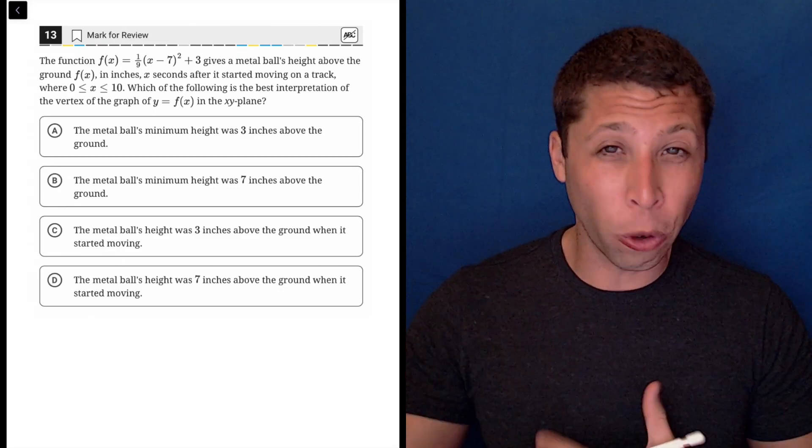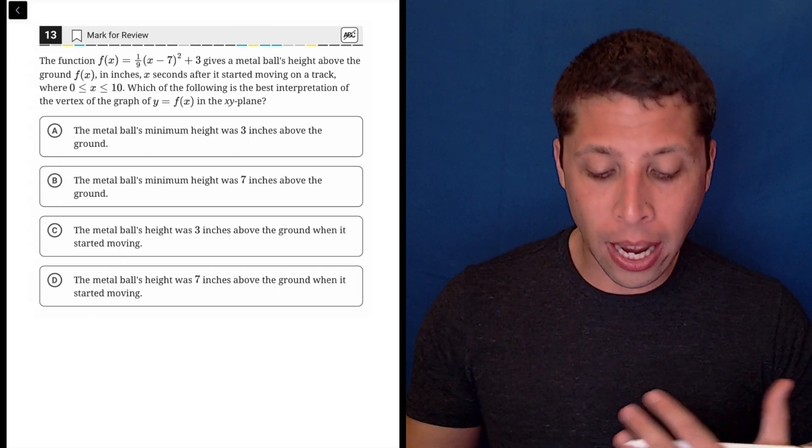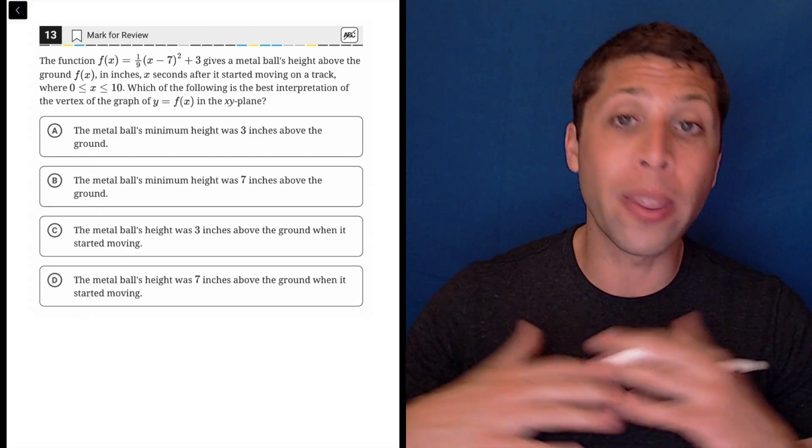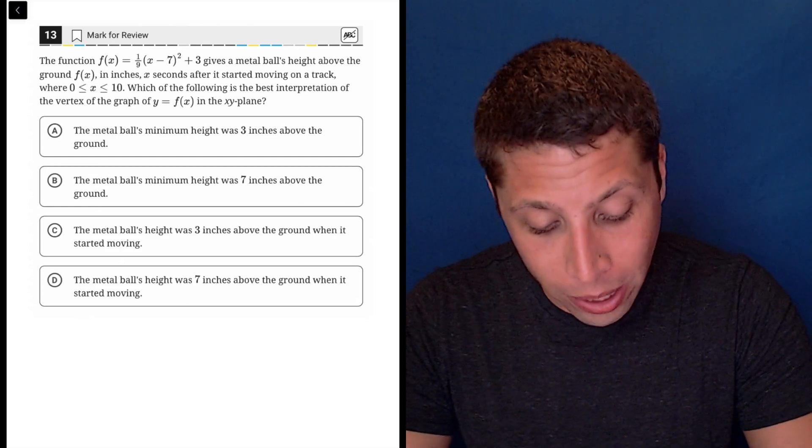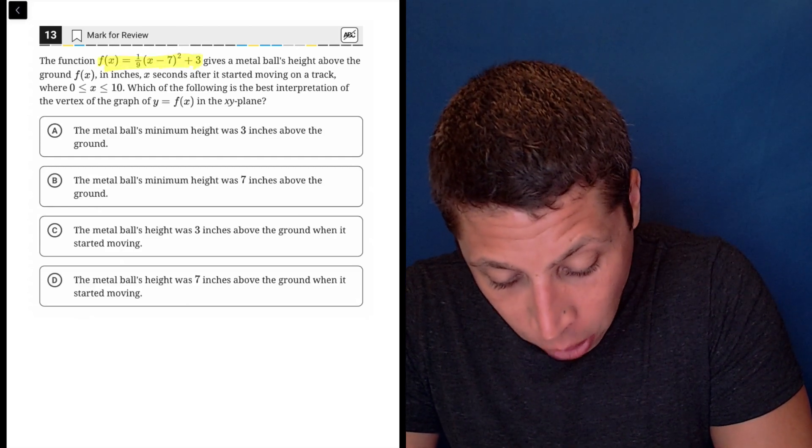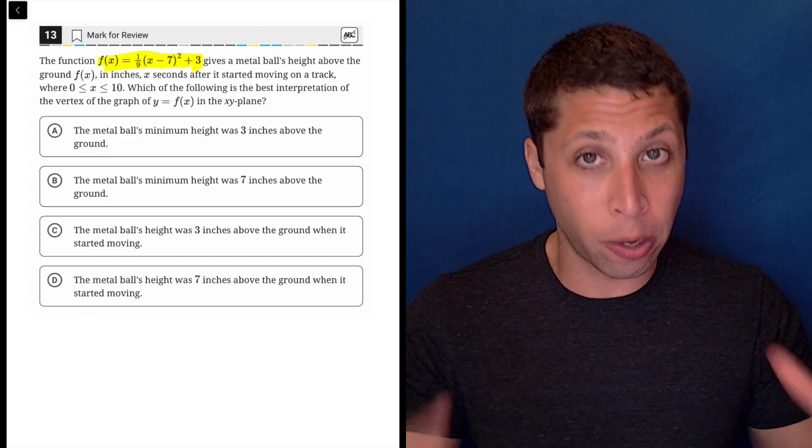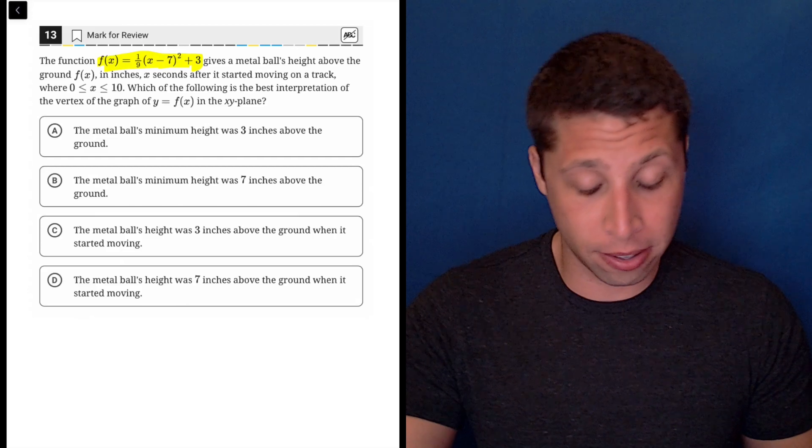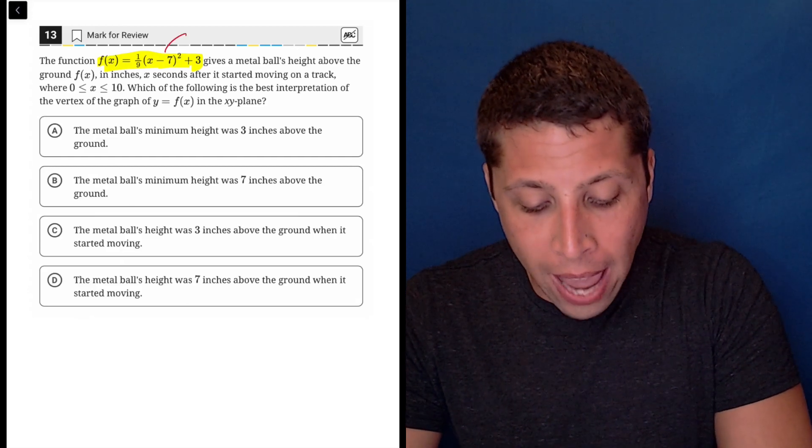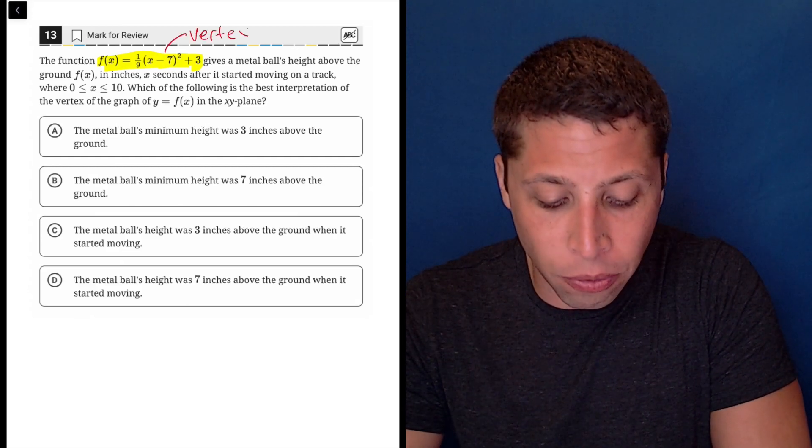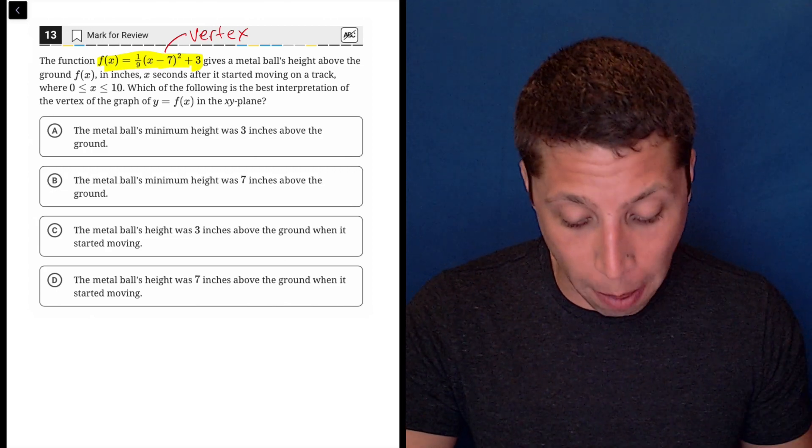Here's another question where we have a story. It seems intimidating, but luckily I understand what this story means even without the story. I understand what this equation is telling me. This equation jumps off the page. This is clearly a parabola. We have an x squared. We have an x minus seven squared, but the x is going to be squared if I FOIL that out. This is the vertex form of the quadratic, of the parabola.